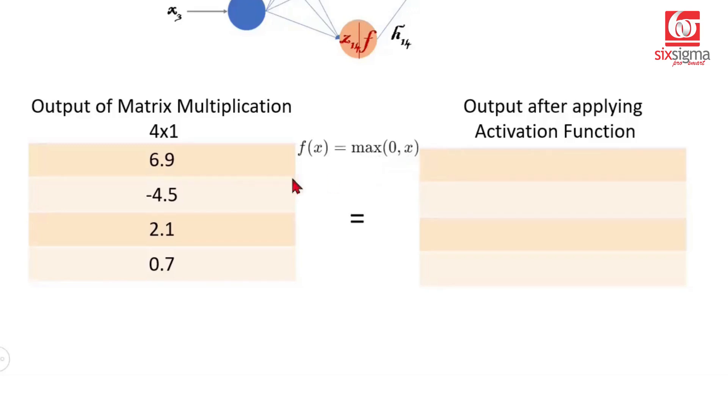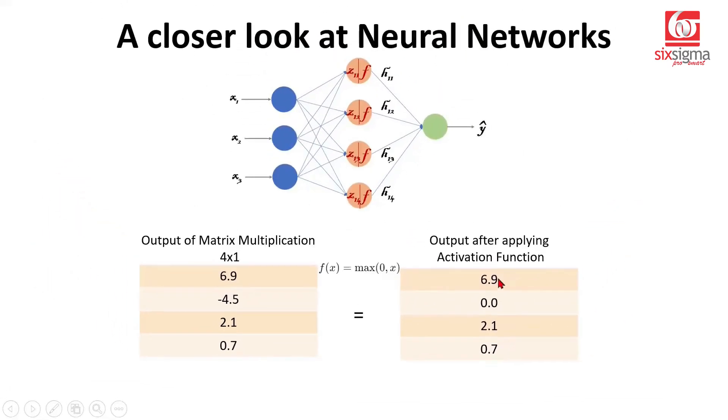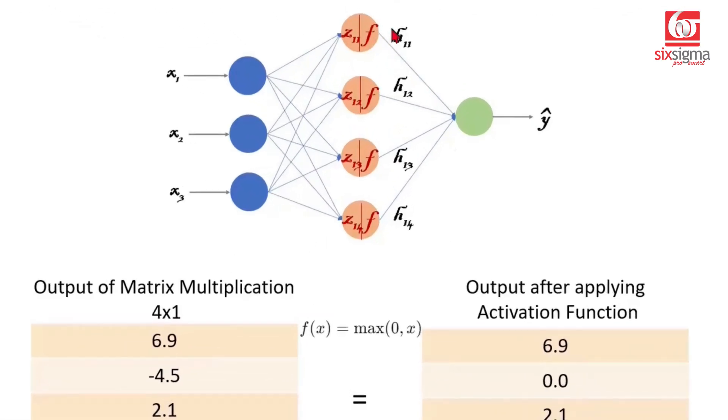Now in this case, if you see, the values which are positive will remain as is. The value which is less than 0 would become 0. So the output of this activation function is going to be something like this. Now what are these values representing? These are representing the output coming from the hidden neurons. Let's say we call it H11, H12, H13 and H14.